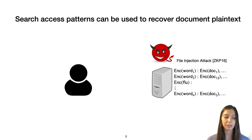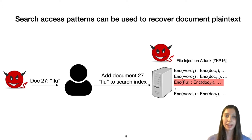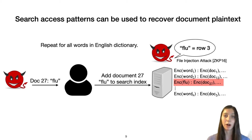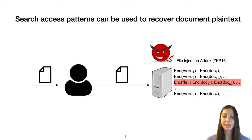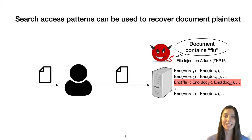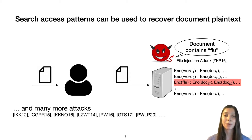To make this concrete, here's an example of how search access patterns can be used to recover document plaintext in a file injection attack. An attacker that has compromised the server can also send the user emails that the user will upload to the search index. The attacker sends a one-word email — say, 'flu' — which updates row 3 of the search index. The attacker repeats this for all words in the English dictionary to learn the mapping between words and rows. Later, when the user receives a confidential email, the attacker watches the search index update row 3 and learns the document contains the word 'flu', recovering plaintext from an encrypted document.